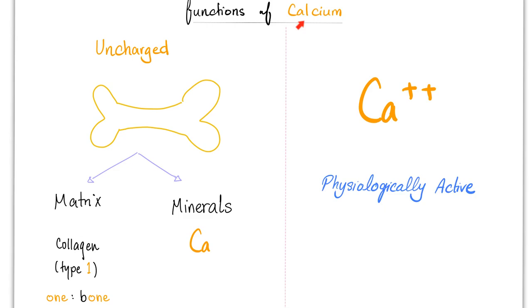First of all, you gotta understand that we have two types of calcium. We have the uncharged or unionized calcium, and then we have the charged or ionized calcium. Which one of them is physiologically active? The answer is only the ionized calcium is. The uncharged is not physiologically active. You can just ram it into bones, give it some structure, and that's about it.